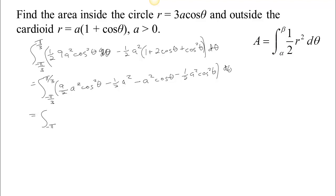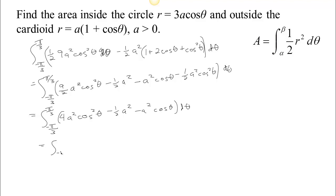We do a little combining. The integral runs from minus pi thirds to pi thirds. Nine halves minus one half leaves 8 halves, which is 4, so we have 4a squared cosine squared theta. Then we have minus one half a squared and minus a squared cosine theta. Now we apply the power-reducing identity: cosine squared theta equals (1 plus cosine 2theta) over 2. So 4a squared cosine squared theta becomes 2a squared times (1 plus cosine 2theta). The full integrand is 2a squared plus 2a squared cosine 2theta, minus one half a squared, minus a squared cosine theta, all d theta.